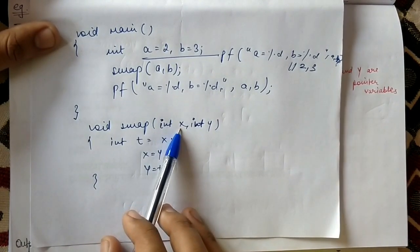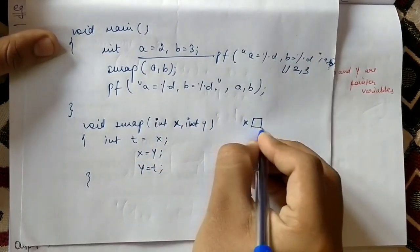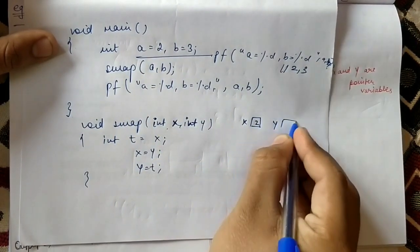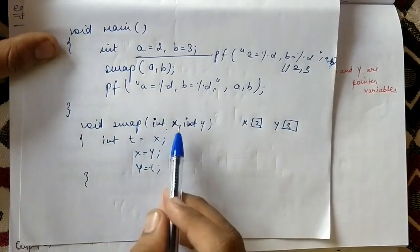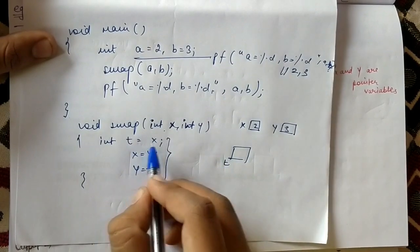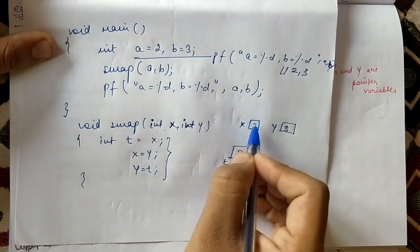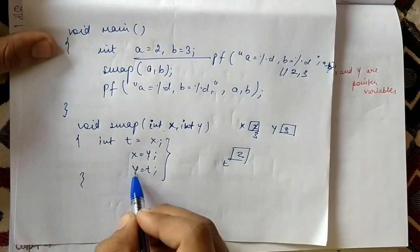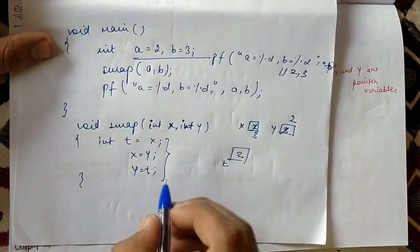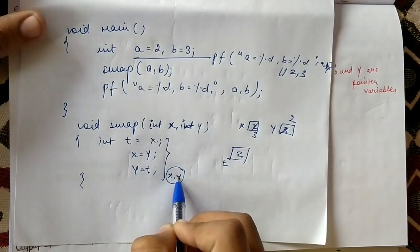The swapping happens but only with local variables. Initially x will be two and y will be three. After performing the swap: t gets the value of x so t becomes two, x gets the value of y so x becomes three, and y gets the value of t so y becomes two. Printing x and y inside the method gives the swapped values.